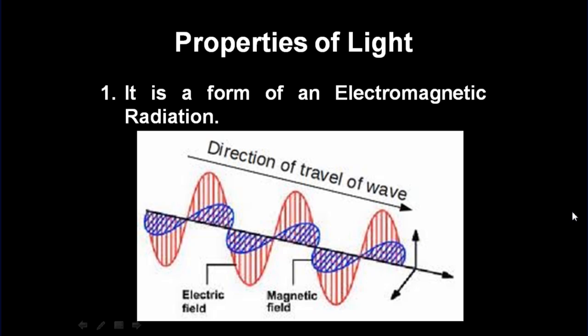What are the properties of light? It is a form of an electromagnetic radiation.